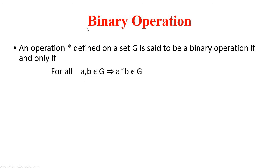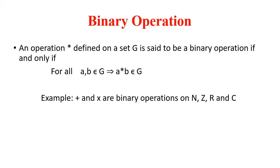Let me define binary operation. An operation star defined on a non-empty set G is said to be a binary operation if and only if for all a, b belonging to G implies a star b belongs to G. Here star can be addition, multiplication, subtraction, division, or any other mathematical operation. For example, addition and multiplication are binary operations on the set of natural numbers, integers, real numbers, and complex numbers.